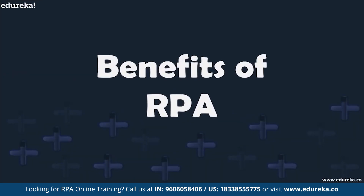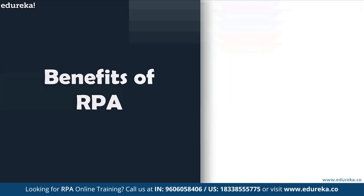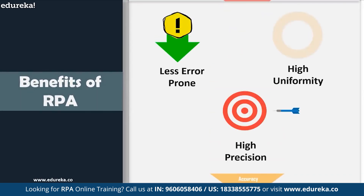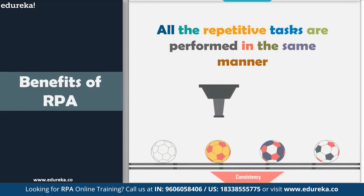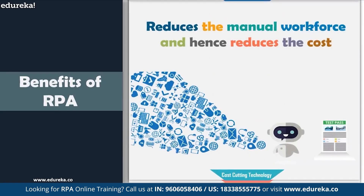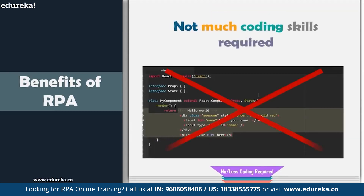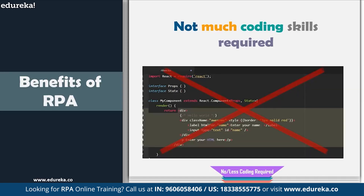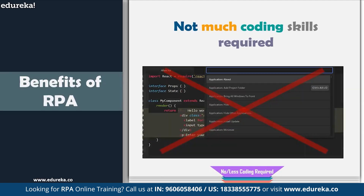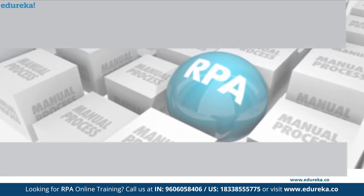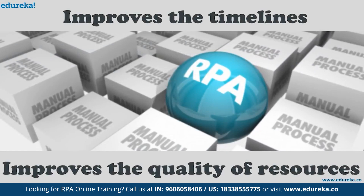Now let's look at the benefits of RPA. First, accuracy — RPA software is generally less prone to errors and functions with high uniformity and precision. Next, consistency — repetitive tasks are performed in the same manner even if it's the thousandth time. It also helps in reducing cost, as RPA reduces the manual workforce needed to perform tasks. It also increases productivity, since execution time is much faster compared to a manual approach. Finally, no or minimal coding is required — RPA software doesn't require much programming knowledge, so even someone from a non-IT background can start a career in robotic process automation. RPA not only improves timelines but also improves the quality and productivity of resources.